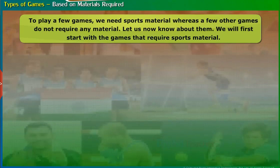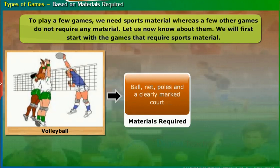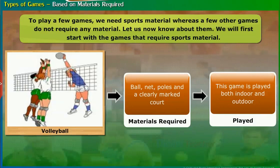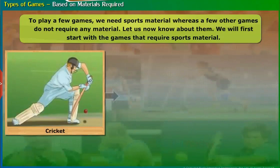Volleyball — materials required: ball, net, poles, and a clearly marked court. This game is played both indoor and outdoor. Cricket — materials required: bat, ball, wickets, and a cricket ground. This game is played both indoor and outdoor.